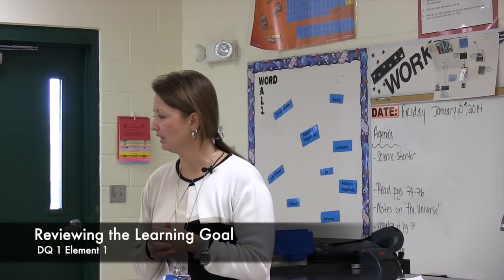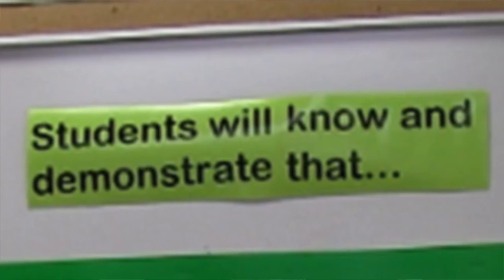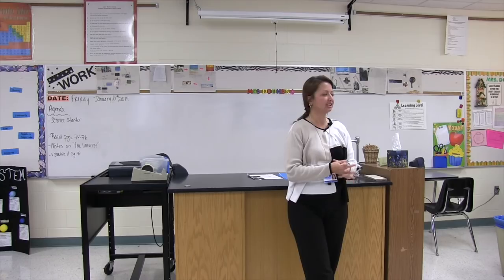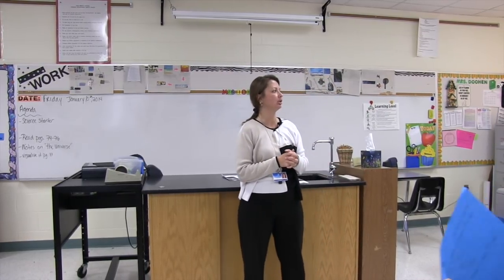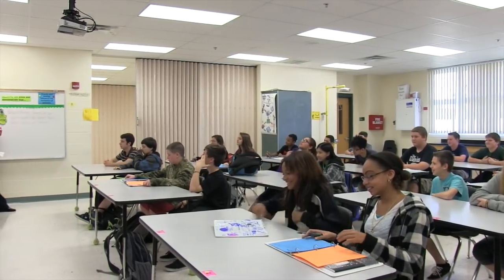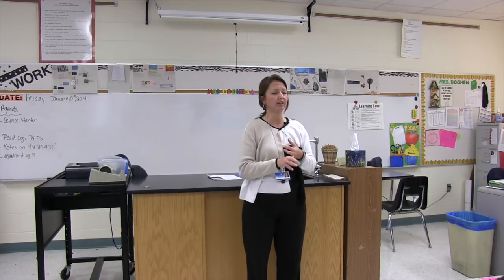All right, guys, before we get started, let's take a look at our learning goal for this unit. At the end of this unit, students will know and demonstrate that gravity and energy influence the formation of galaxies. Our science starter today is: which things found in our solar system are larger than Earth, and which are smaller than Earth? Yesterday we began our new unit on the universe and started talking about the solar system. Before we go into stars, let's review. Give me one thing larger than Earth and one thing smaller than Earth.